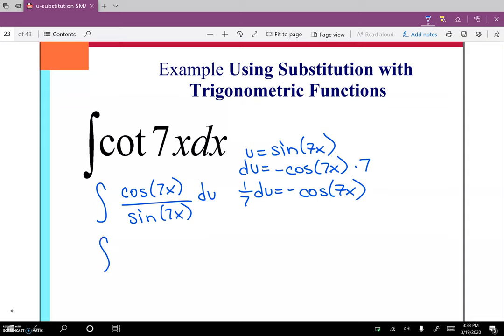So we can go ahead and replace that. We get one-seventh u to the negative one du, which ends up with one-seventh the natural log of the absolute value of u plus c. And in this example, u is sine of 7x.